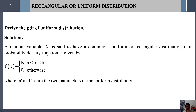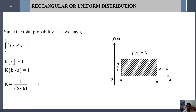Next we shall derive another form of the probability density function of uniform distribution. Let us assume X follows uniform distribution where f(x) = k (by definition, a constant) for x in the interval a to b, and f(x) = 0 outside this interval. So only for this interval f(x) = k, where a and b are parameters of the uniform distribution.